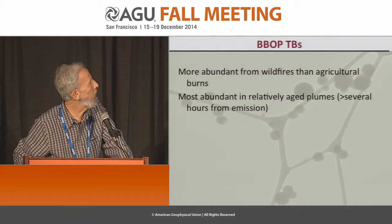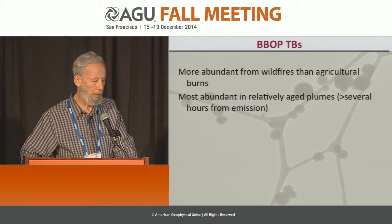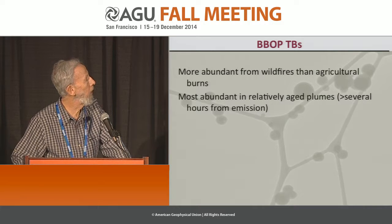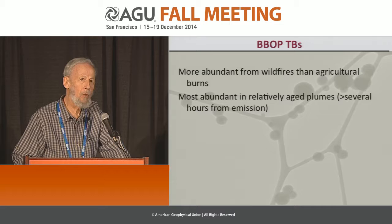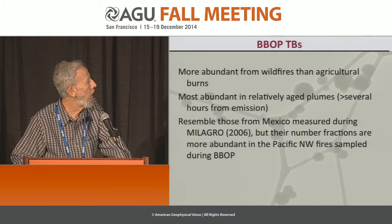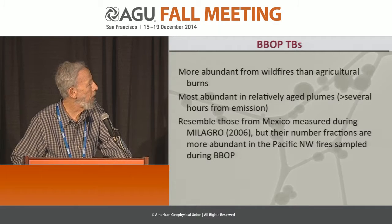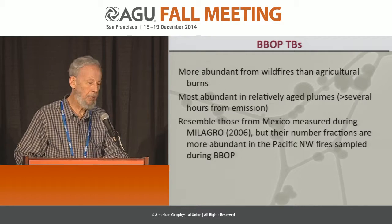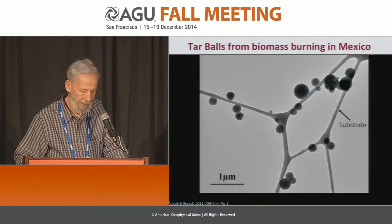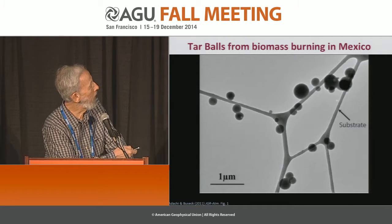For Bebop, they appear to be more abundant — and this is preliminary data — in wildfires and agricultural burns, and they also seem to increase with aging. They resemble those we saw in Mexico during Milagro, but the number fractions appear to be more abundant in the Pacific Northwest, preliminarily. We haven't spent enough time looking at them yet.